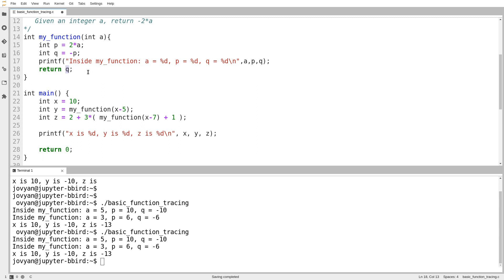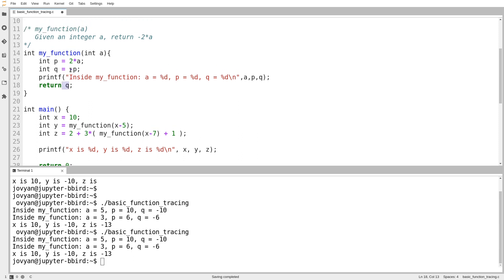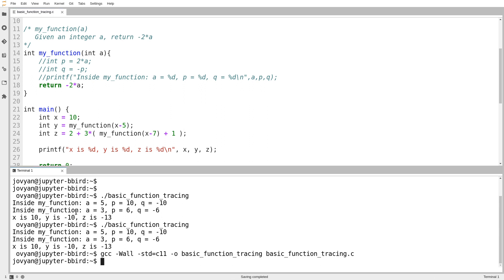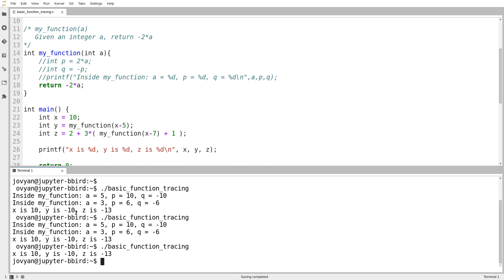And one final point is that what I put on the right-hand side of my return statement can be any expression. It does not actually have to be just one variable. And so what you might observe is what's actually happening in this function is you give me a value a, and what's actually being returned is negative 2 times a. So it would be perfectly valid to just write return negative 2 times a in one fell swoop. And you can see I still get the same output.